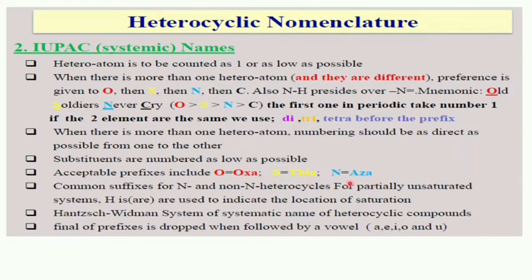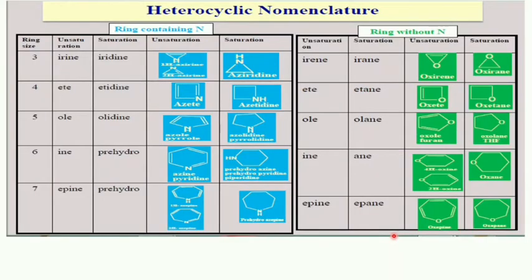So oxa indicates oxygen, thia indicates sulfur, and aza indicates nitrogen. Common suffixes for nitrogen-containing and non-nitrogen heterocyclic systems, for partially unsaturated systems, are used to indicate the location of saturation. In the Hantzsch-Widman system of systematic naming, the final 'a' of the prefix is dropped before the suffix. The table shows ring systems containing nitrogen and ring systems without nitrogen, and what suffix to give based on whether the ring is saturated or unsaturated.